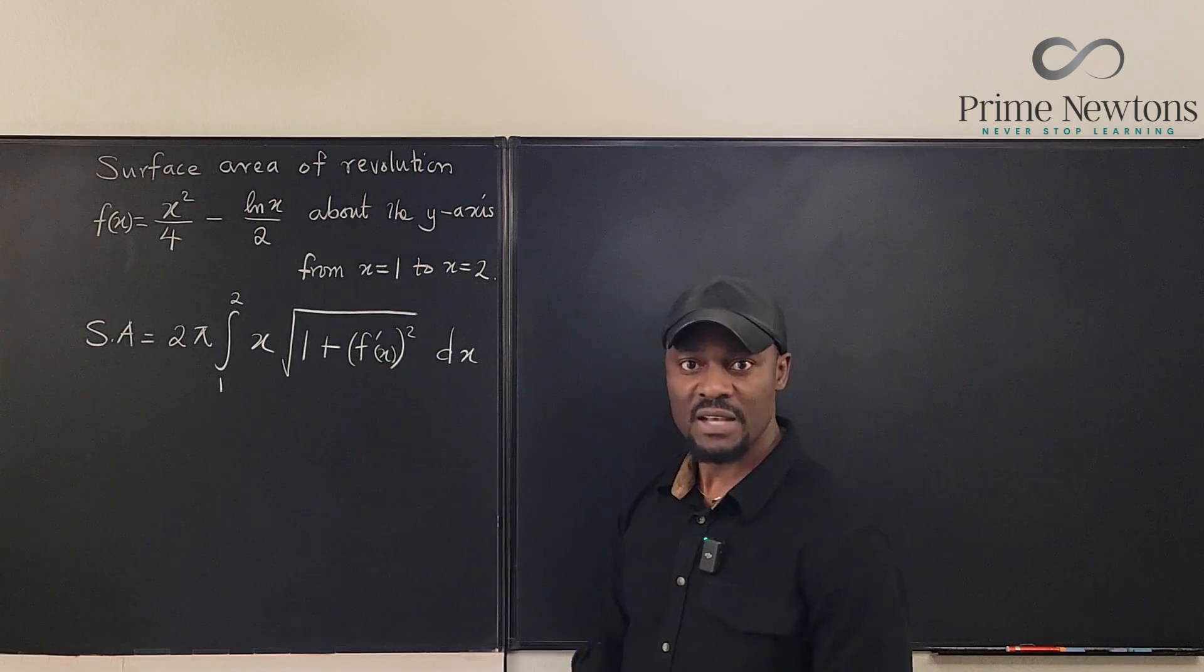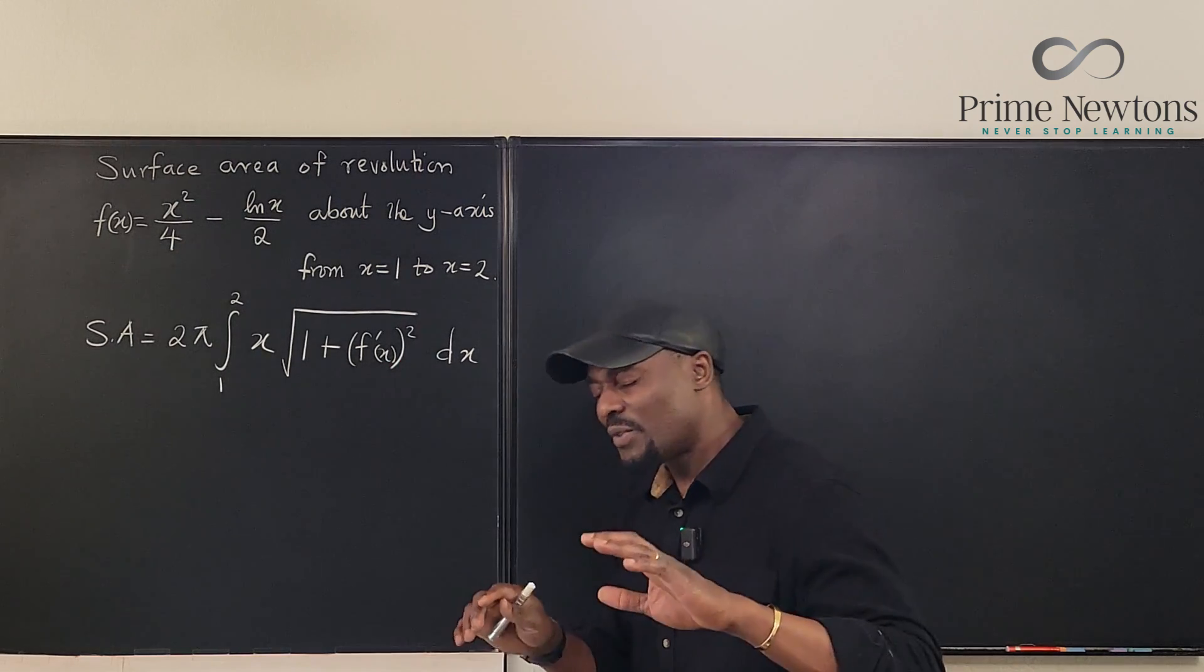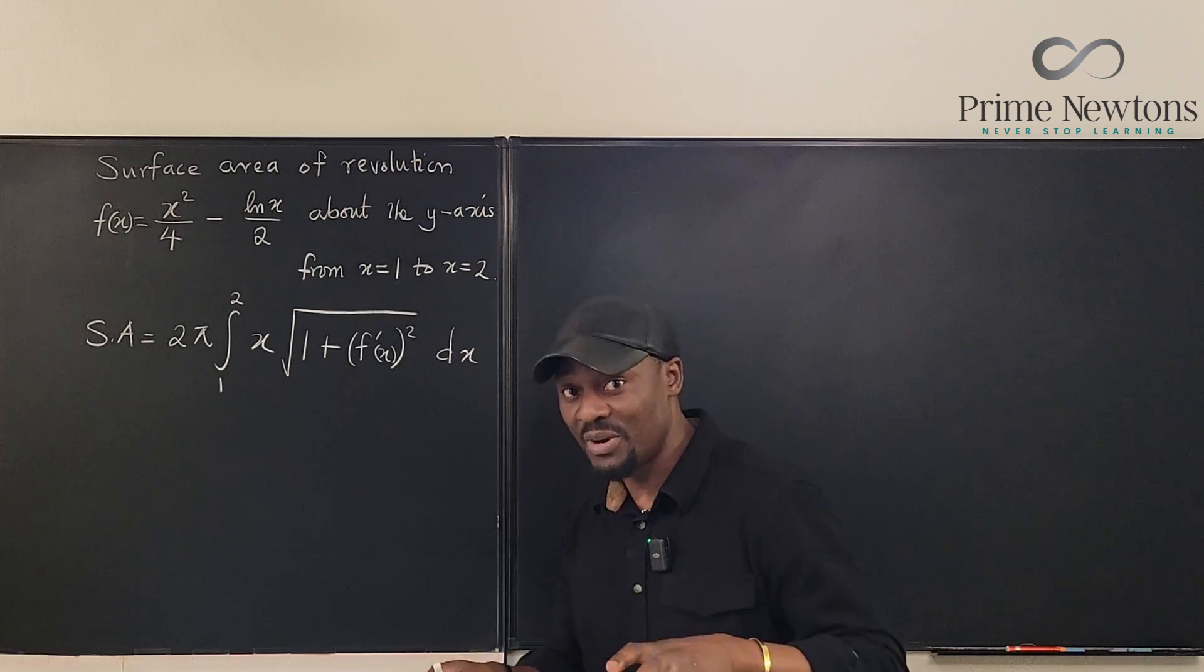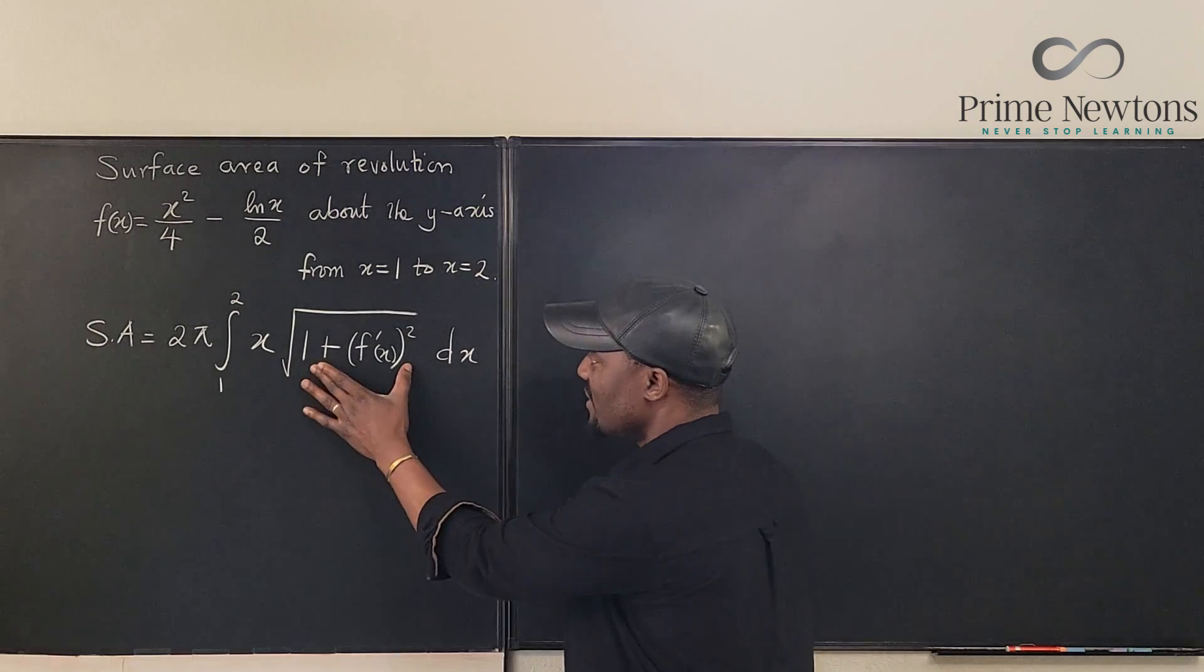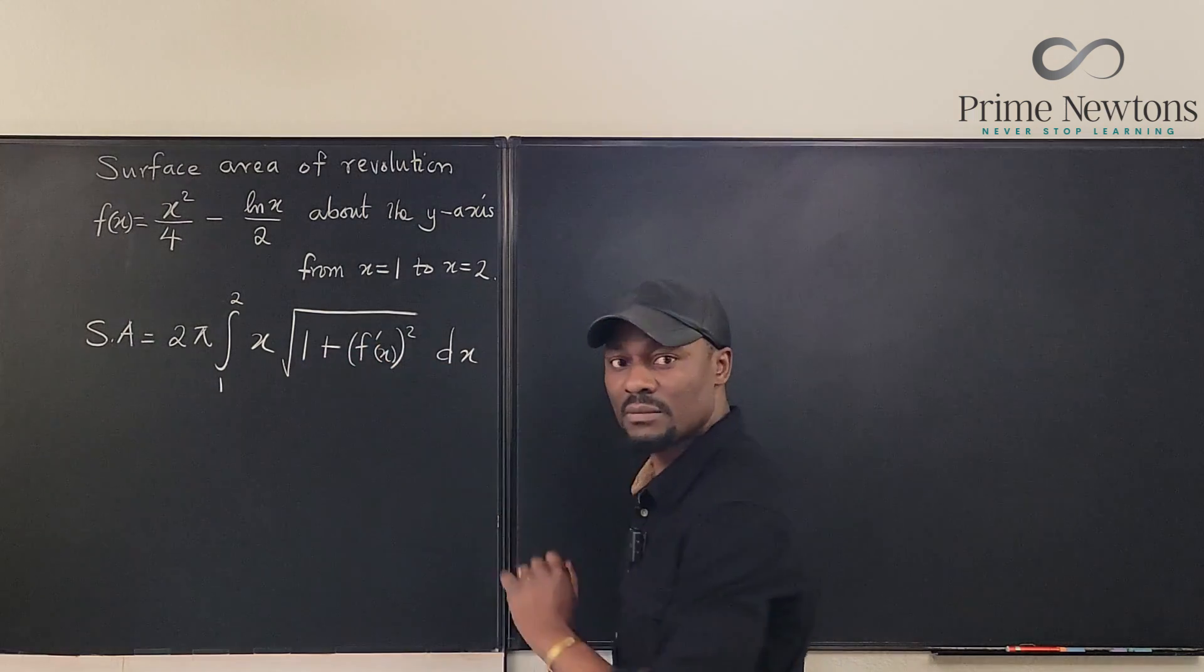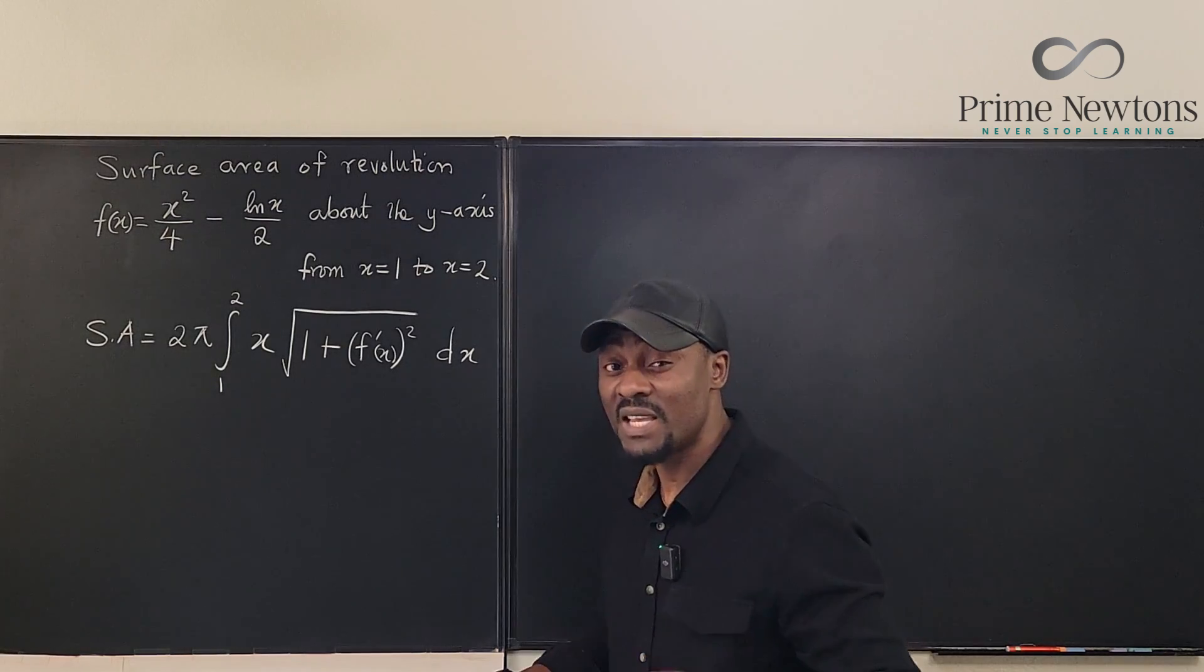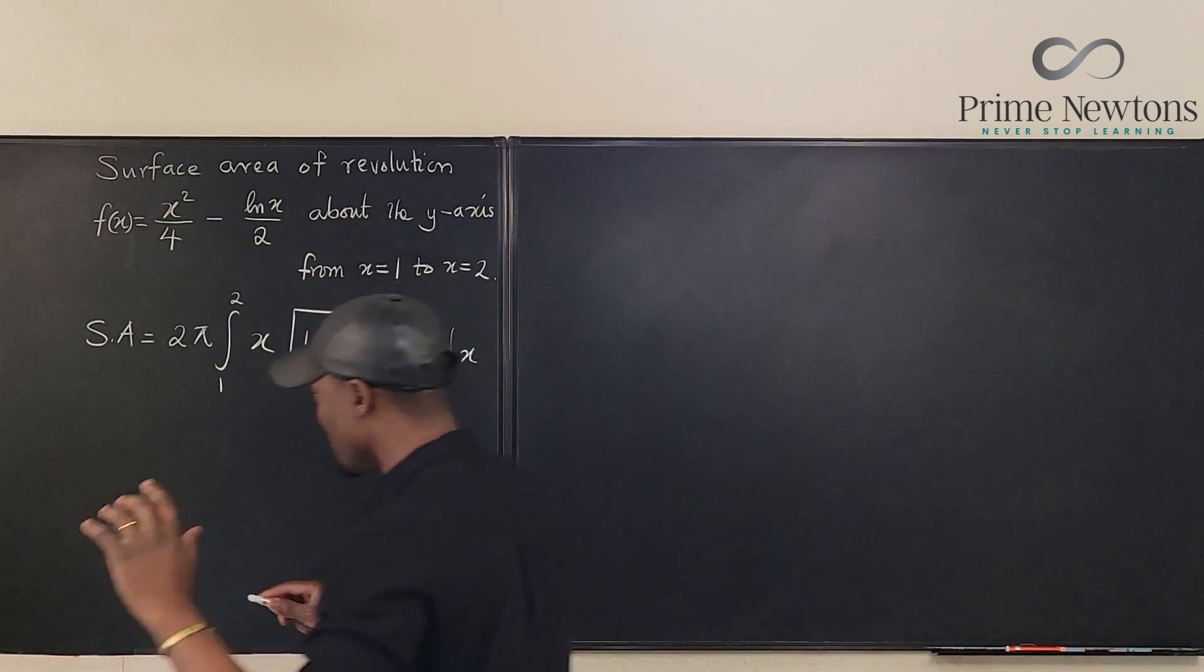So now, what do we do? We need to find f prime of x. Now, for this problem, the hard, hard part is the algebra in between. You need to find this thing under the square root sign. Because once you find it, you just integrate. It becomes very easy. So let's begin.